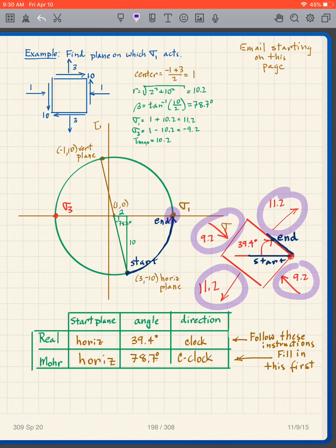It always works out that way - that sigma 1 and sigma 3 are 90 degrees apart. Why are sigma 1 and sigma 3 90 degrees apart in real? Because they're 180 degrees apart in Mohr. So it always works that way with sigma 1 and sigma 3.